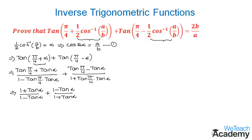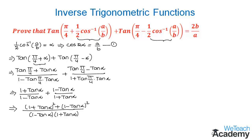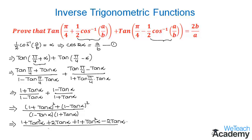Let us take the LCM since both terms are added. In the denominator we get (1 − tan α)(1 + tan α), and in the numerator we get (1 + tan α)² + (1 − tan α)². Expanding using the (a+b)² and (a−b)² formulas gives 1 + tan²α + 2 tan α + 1 + tan²α − 2 tan α, over 1 − tan²α.